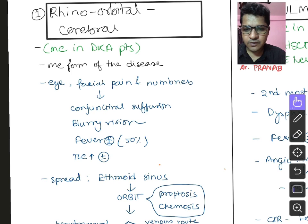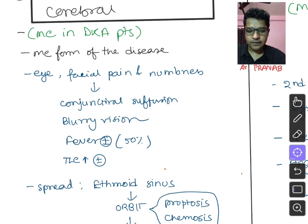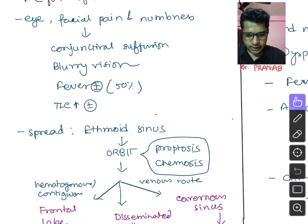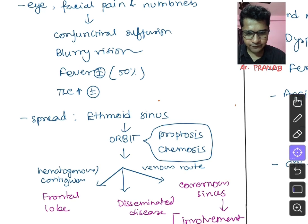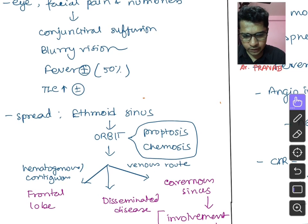The first symptoms include eye and facial pain and numbness. Signs may include conjunctival suffusion and blurry vision. Fever may be present in about 50% of cases, and leukocyte count may or may not be elevated. The disease starts in the ethmoid sinus and progresses to the nearby orbit. At this stage the patient may present with proptosis and chemosis. If ignored, the fungus will spread to the frontal lobe of the brain by hematogenous or contiguous routes, and may also reach the cavernous sinus via venous routes.